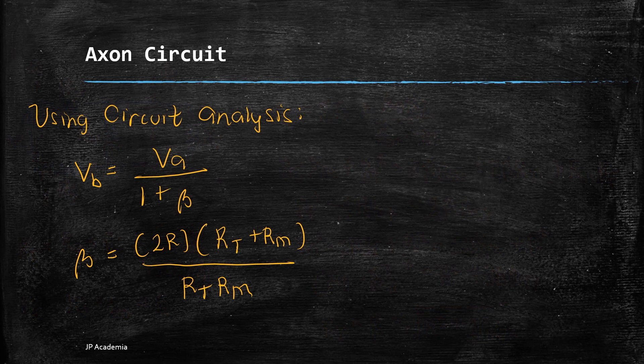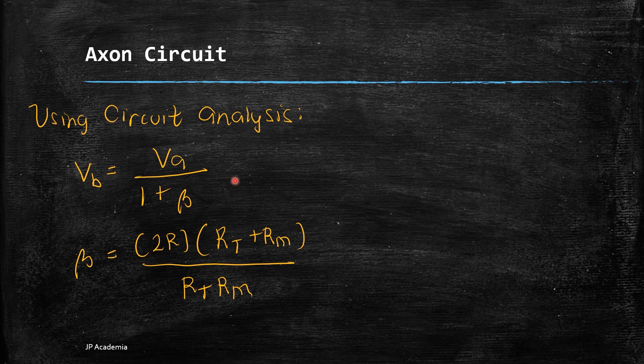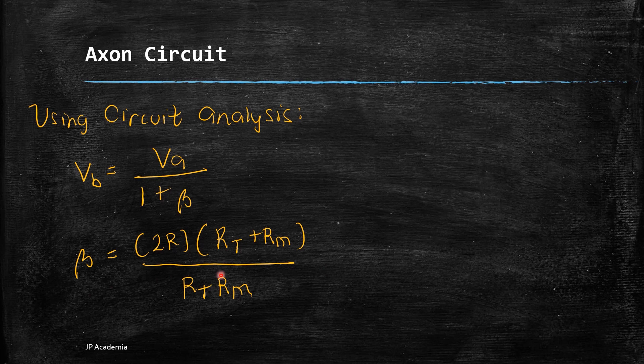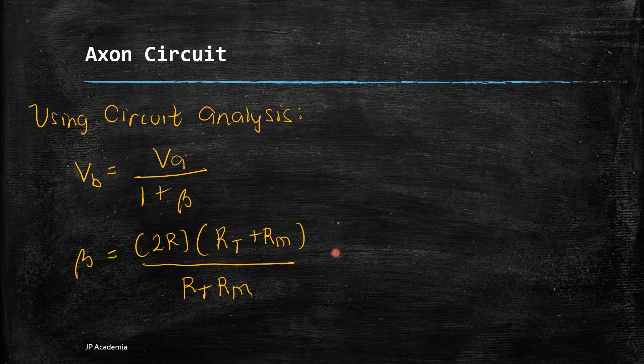Using the equivalent resistance expression, we can arrive at this expression for the voltage drop across a small section of length of the circuit. The β here refers to the resistance expression. And that's it for this lecture. I have shown that we can model the axon part of a neuron as an electrical circuit. Thank you.